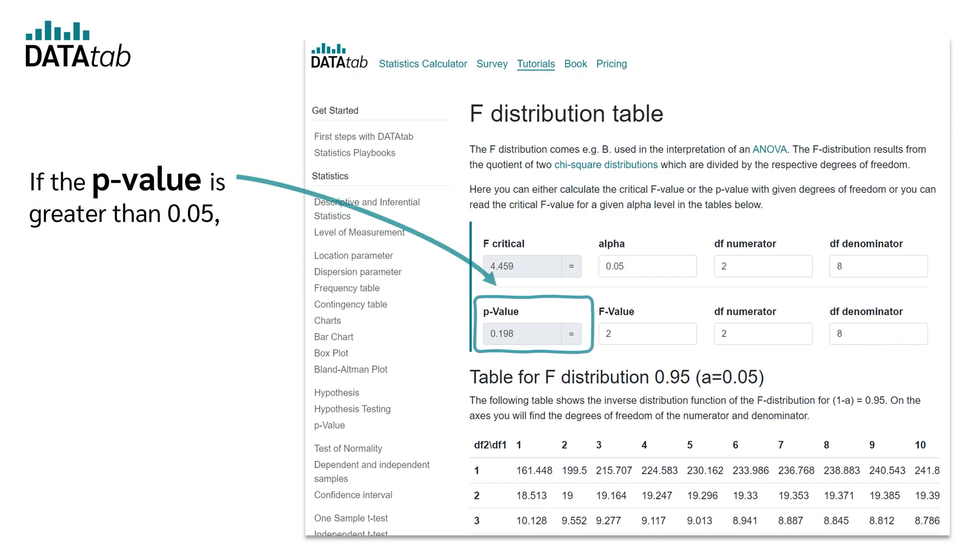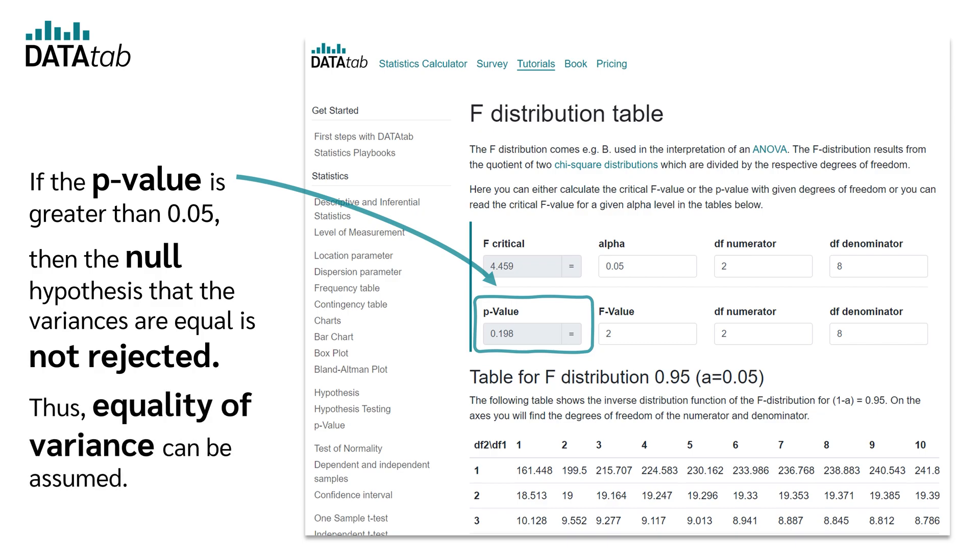If the p-value is greater than 0.05, the null hypothesis that the variances are equal is not rejected. Thus, equality of variance can be assumed.